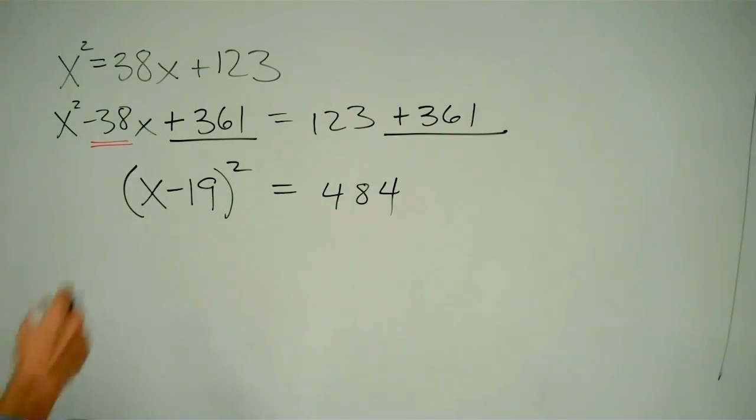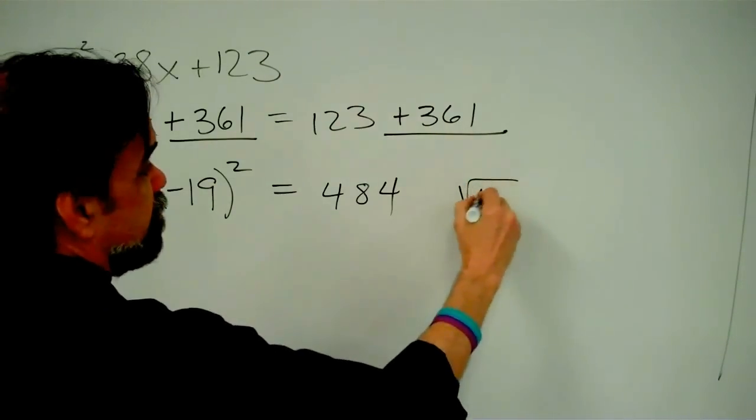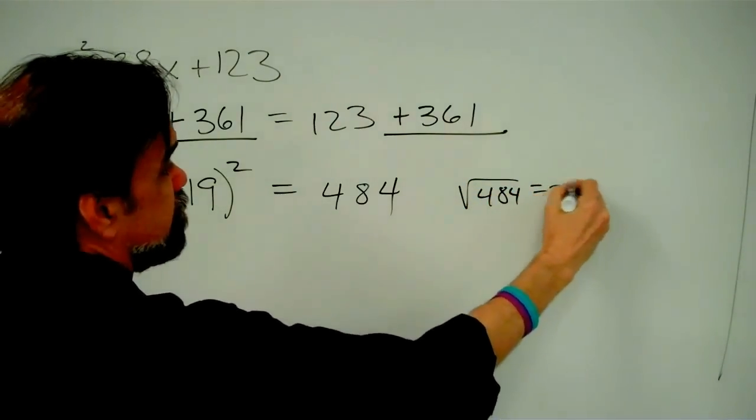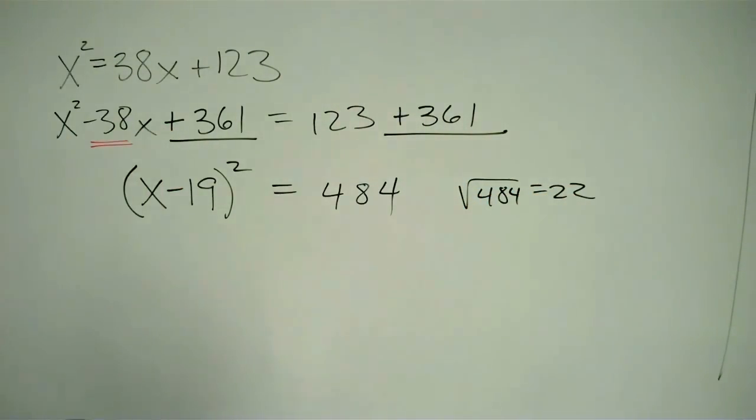Now I have something squared equals 484. So the first thing I need to know is, what's the square root of 484? As it turns out, the square root of 484 is 22.